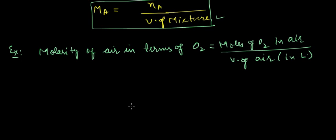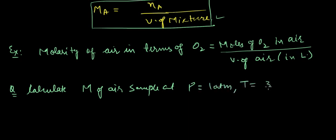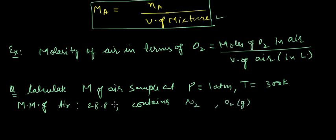Next, let's have a question wherein we have to calculate molarity of air sample at pressure equals 180 atm, temperature equals 300 Kelvin. The average molar mass of air is given 28.8, containing N2 and O2. Calculate the molarity of air sample in terms of O2.